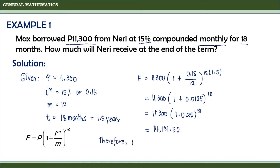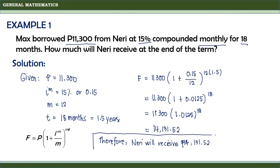Therefore, Neri will receive 14,131.52 pesos from Max at the end of the term.